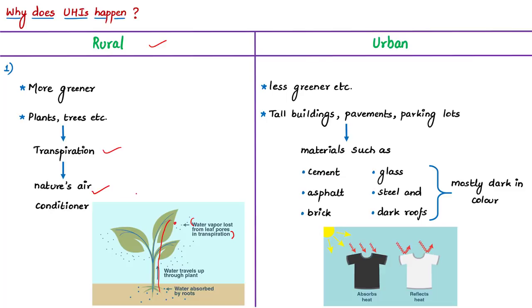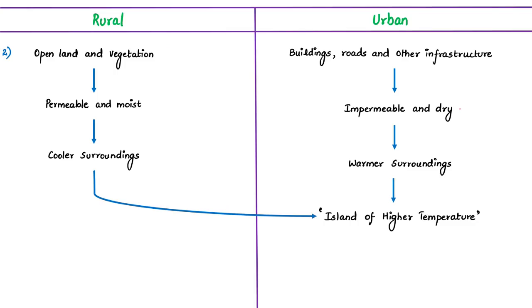In a big city, you won't see many plants. Instead, you see sidewalks, streets, parking spaces, and tall buildings. Most of the ground surface is covered with concrete. These structures are usually made up of materials such as cement, brick, glass, and steel — heat-absorbing materials. As urban areas develop, buildings, roadways, and other infrastructure replace open land and vegetation. Surfaces that were once permeable and moist become impermeable and dry, causing urban regions to become warmer than their rural surroundings.